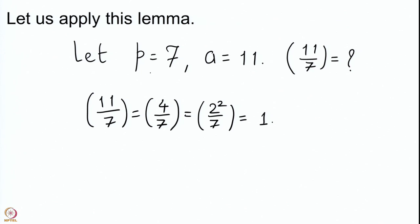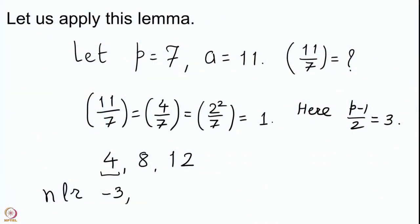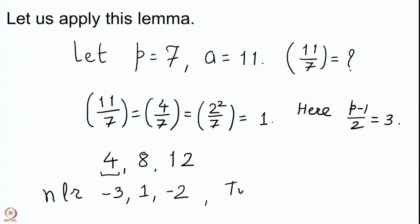We look at p equal to 7, so (p-1)/2 is 3. We have to take the first 3 multiples of 4: they are 4, 8, and 12, and then we take their numerically least residues. The numerically least residue of 4 is -3 since 4 is bigger than 7/2. For 8, which is 1 modulo 7, the numerically least residue is 1. For 12, which is 5 modulo 7, since 5 is bigger than 7/2, the numerically least residue is -2. So 2 of these are negative.